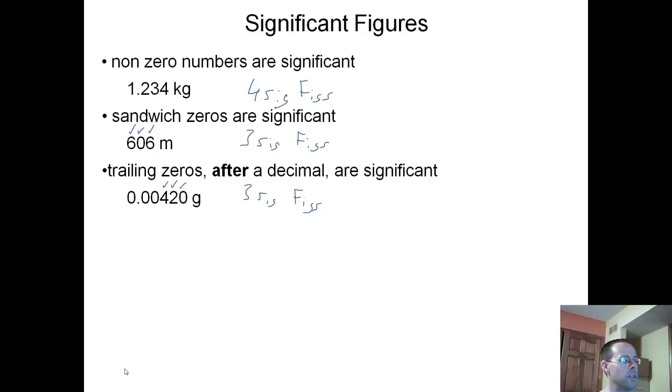Our other rule relates to this example I just gave you: leading zeros are never significant. In this example, 0.08 liters, leading zeros are zeros at the front of our number. This is at the front, not significant. This is at the front, not significant. So we have an eight, so we have one sig fig.